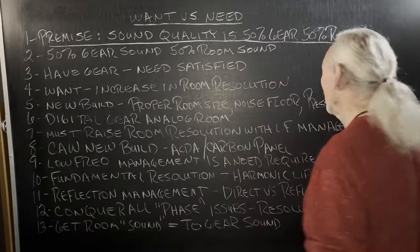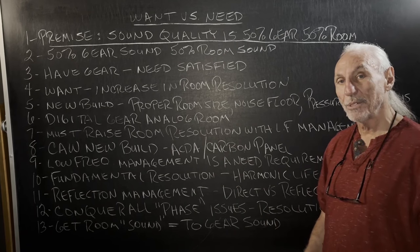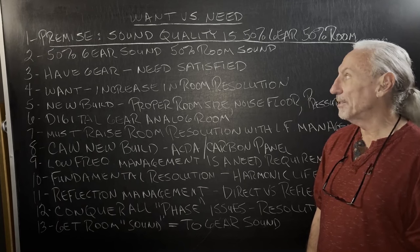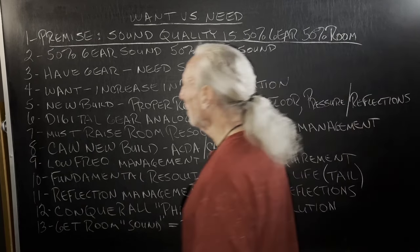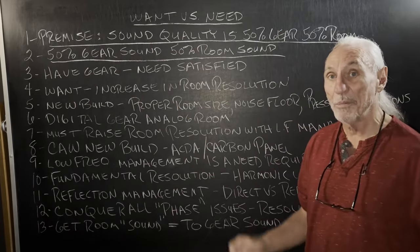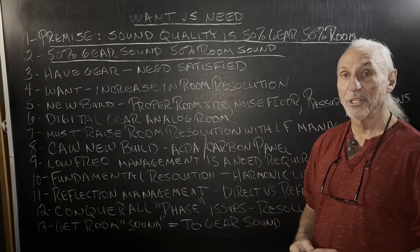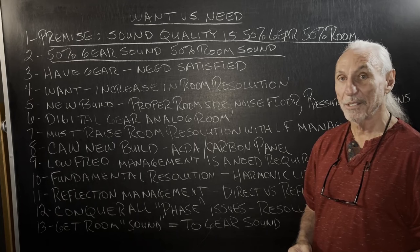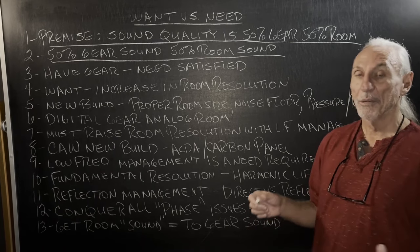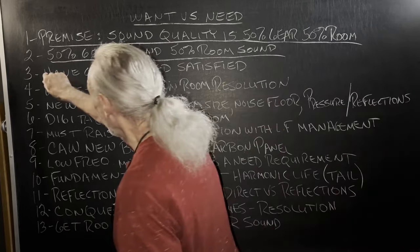Let's work with the premise that our sound in our room is 50% gear and 50% room. We can argue all day long about the variance in those numbers, but for purposes of this video let's accept that: 50% gear sound, 50% room sound. The room has a sound just like the gear, and unfortunately they're not compatible in most cases — the room's too small, the dimensions don't work for low frequency pressure, and reverberation times are not equal throughout the room.